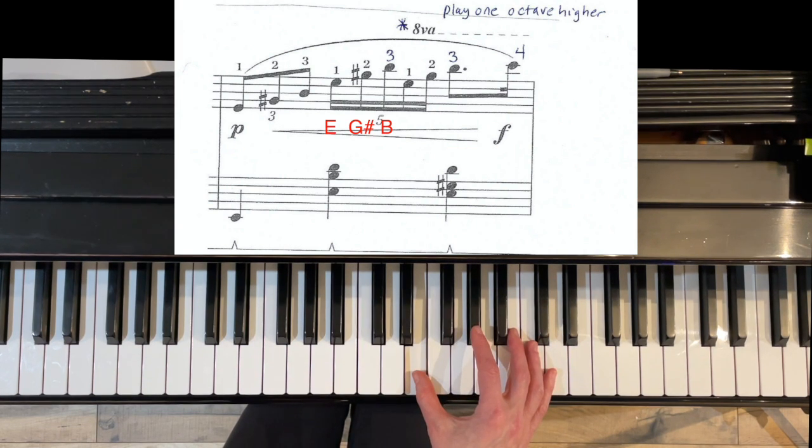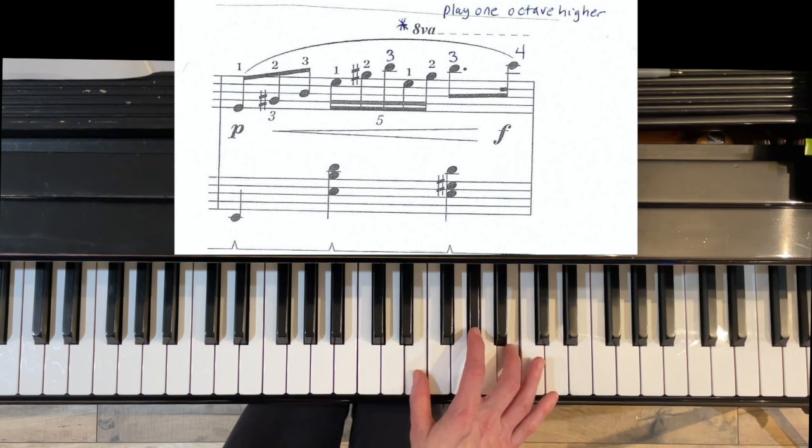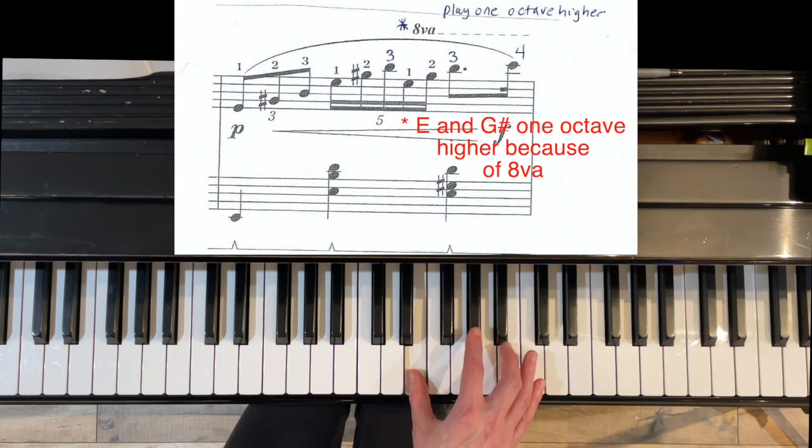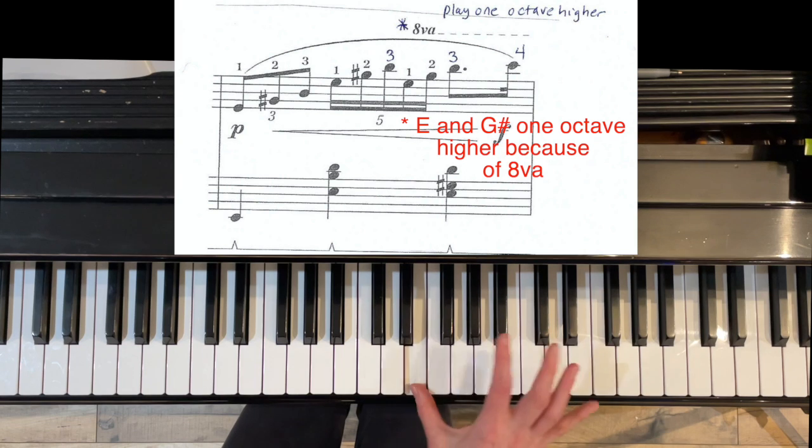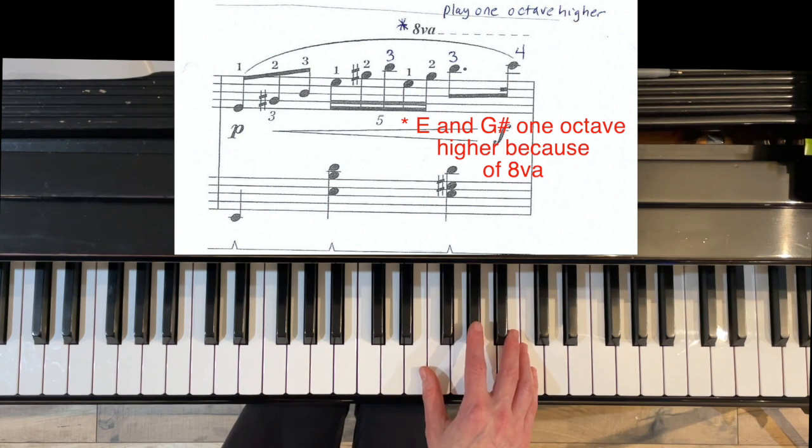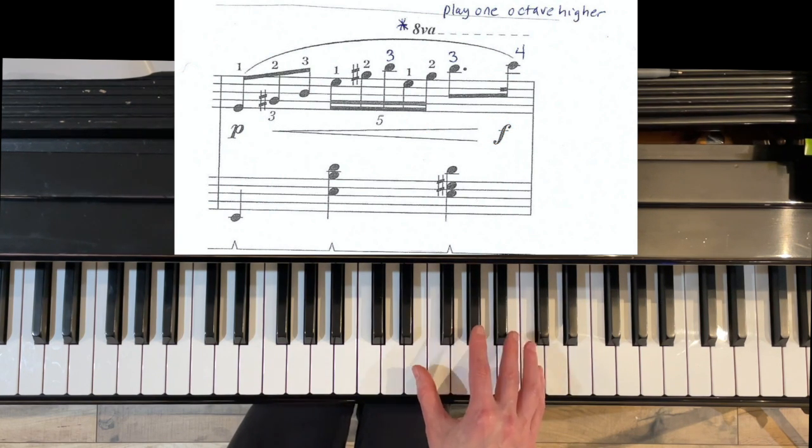Then we have another G sharp, then we have another B. And it looks like we have this note again and this note again at the end of that group of five notes. But if you look above, you see this 8VA with a bunch of dotted lines. And what that means is instead of playing, you're going to play one octave higher. They use that so they don't have to draw a bunch of extra lines above the staff, which can be really confusing.